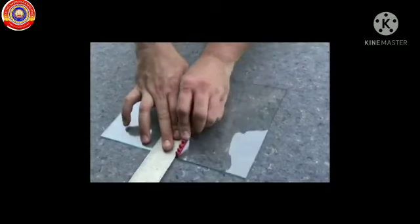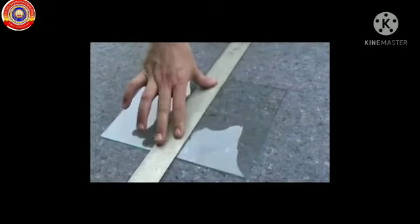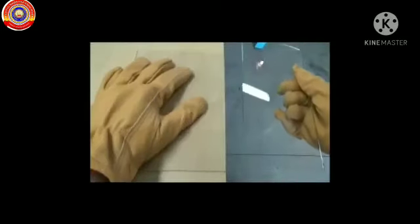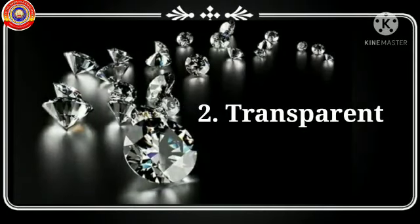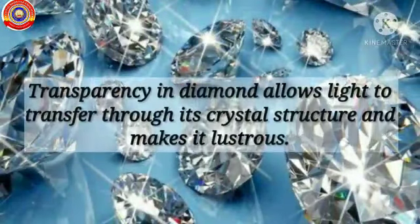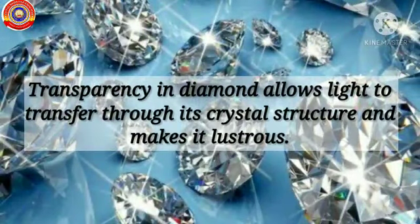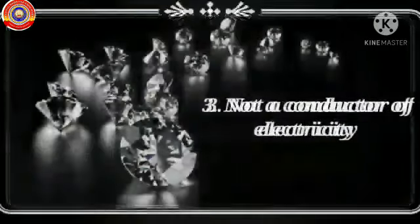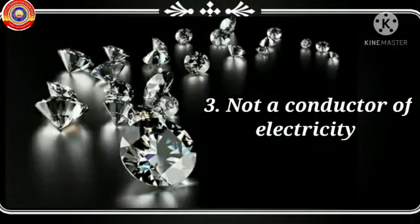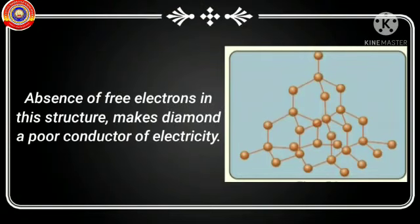Because of its hardness, diamond is used for cutting glass. The next characteristic is its transparent nature — the transparency in diamond allows light to pass through its crystal structure, making it more lustrous. Diamond is also not a conductor of electricity. Since each carbon atom is covalently bonded with four other carbon atoms, there is no free electron in the crystal structure, making diamond a poor conductor of electricity.